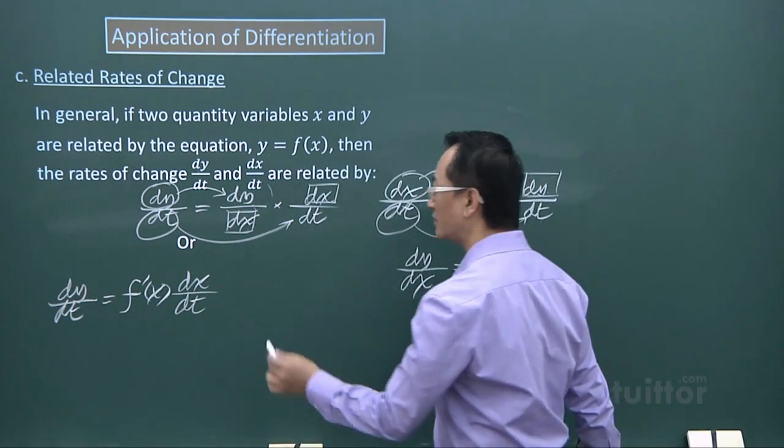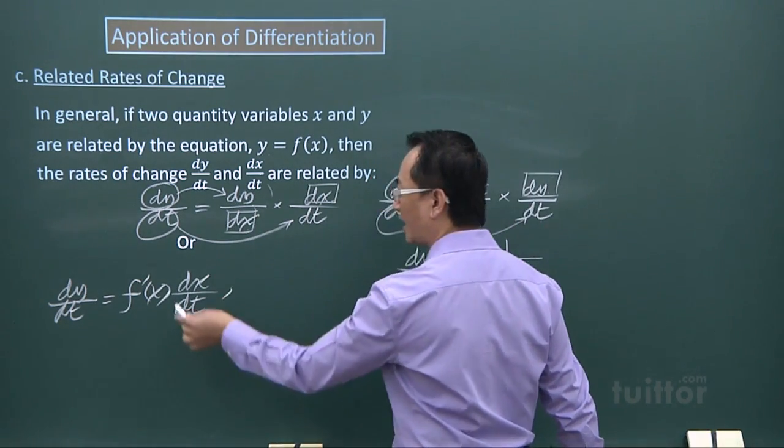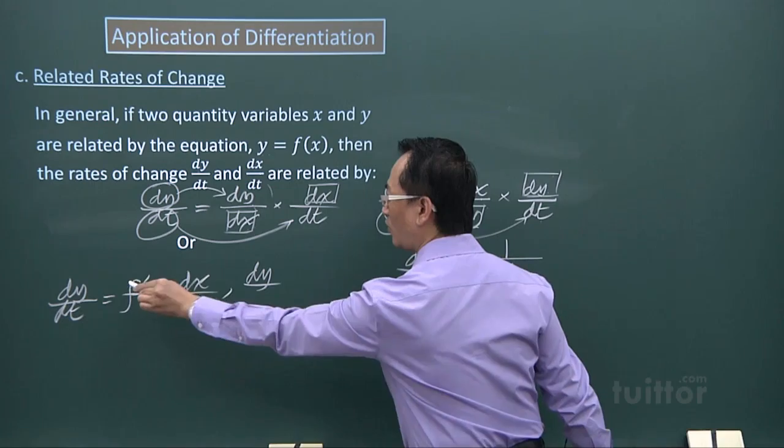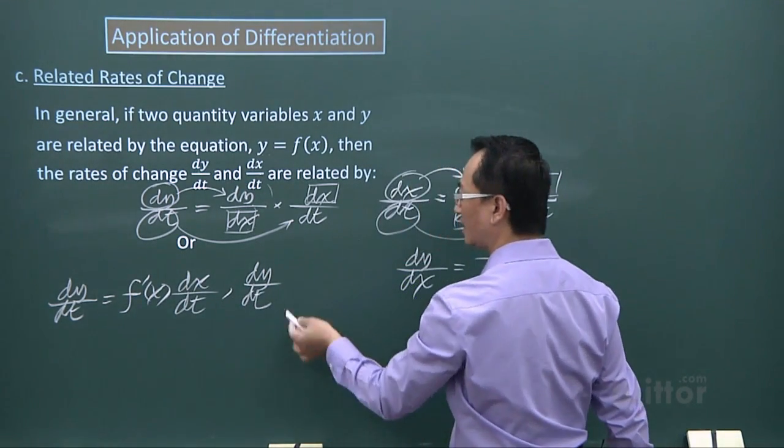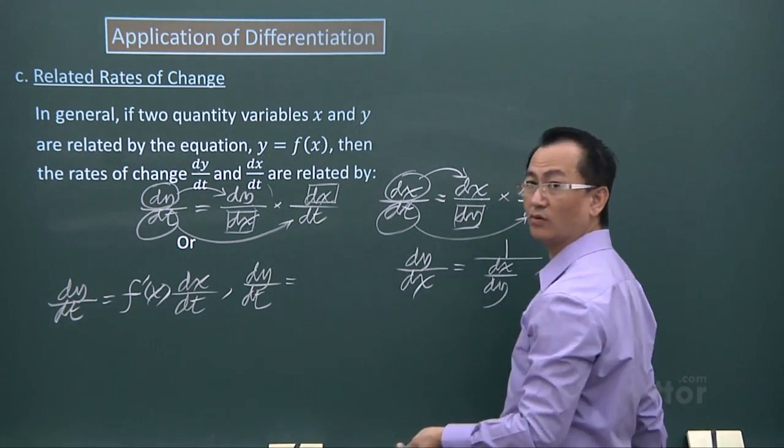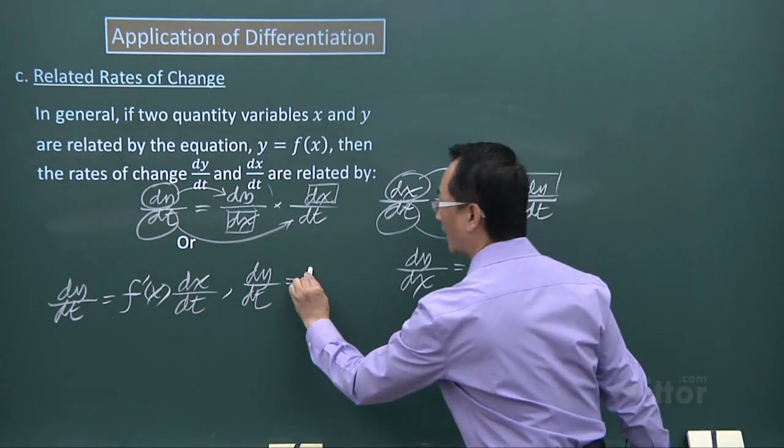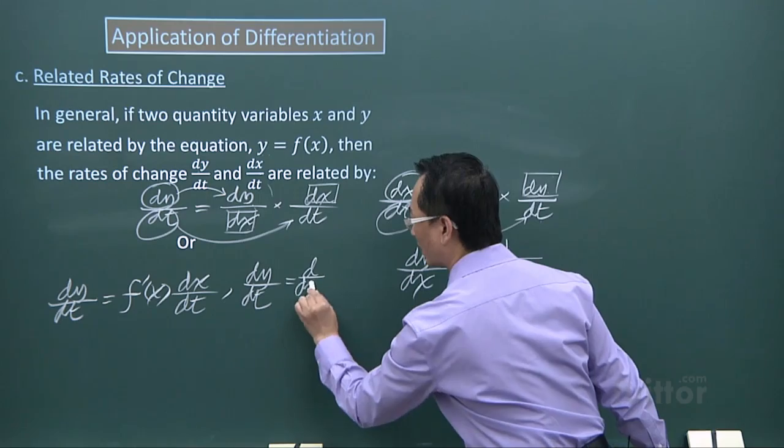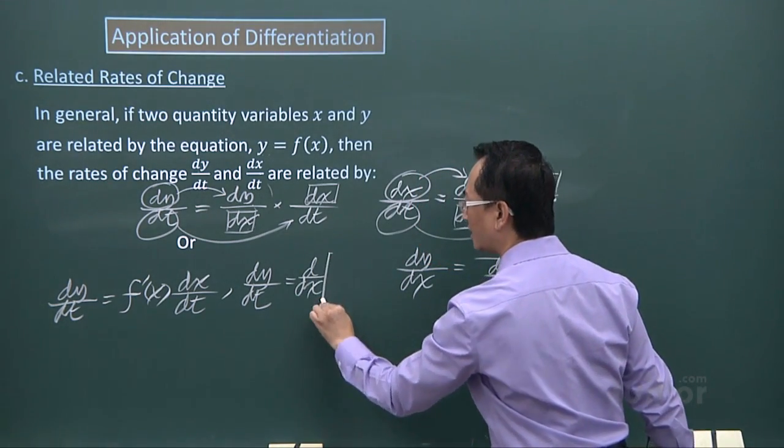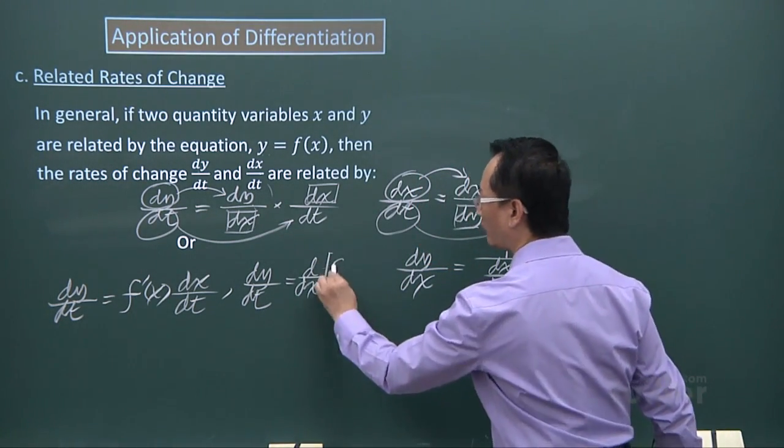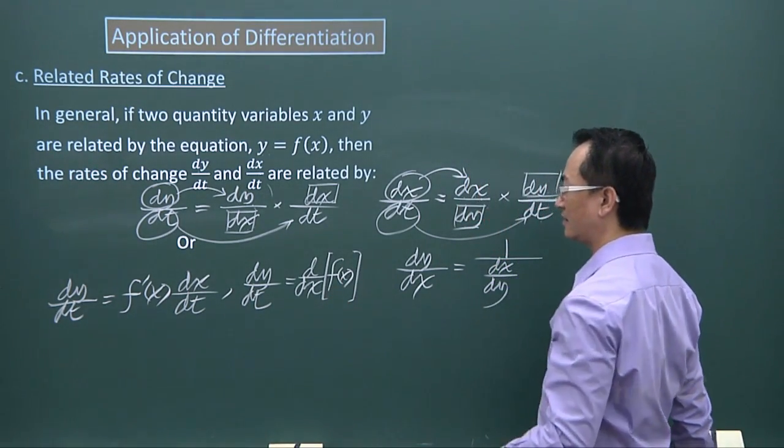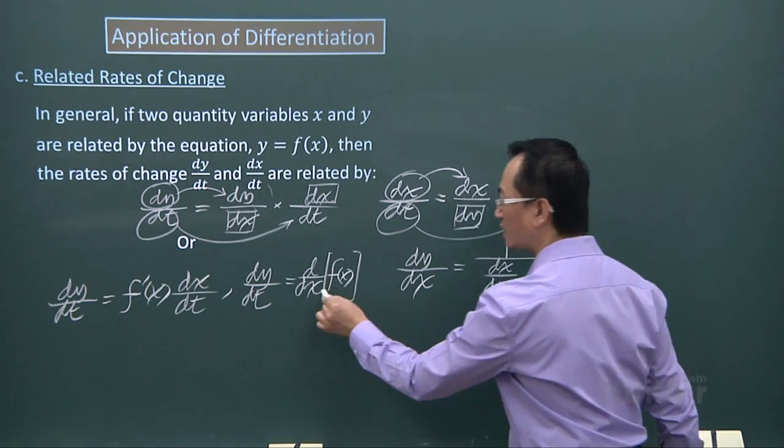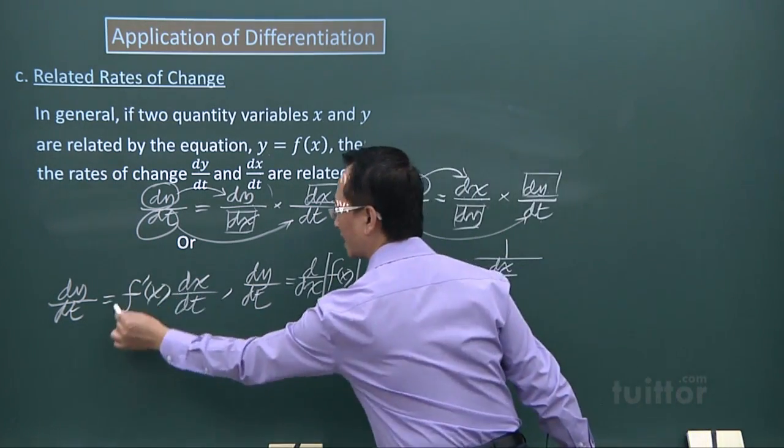Or I can also write it this way. dy/dt is equal to, I differentiate with respect to x the function f(x), dx. This will take care of this expression here, multiplied to dx/dt.